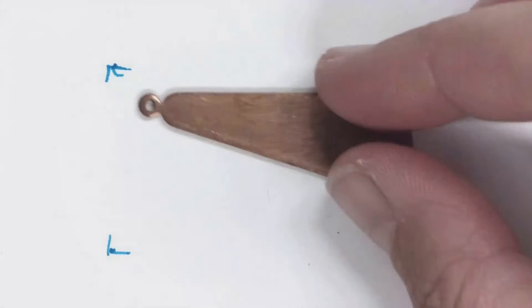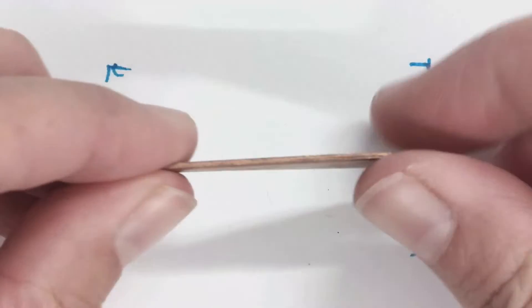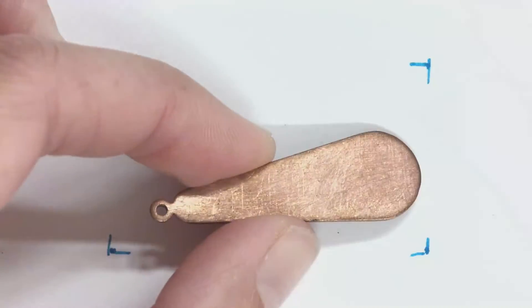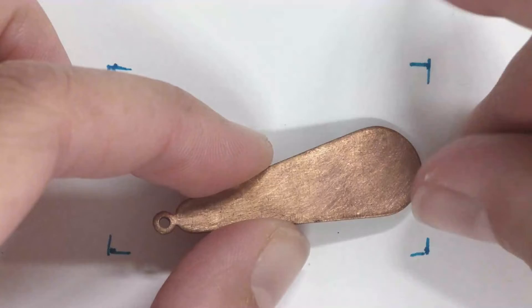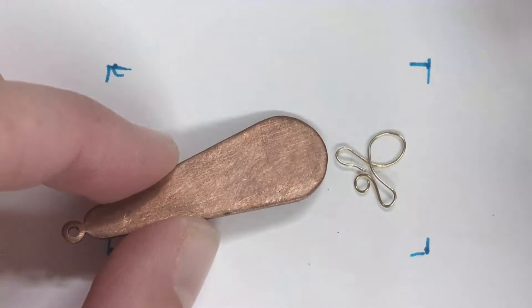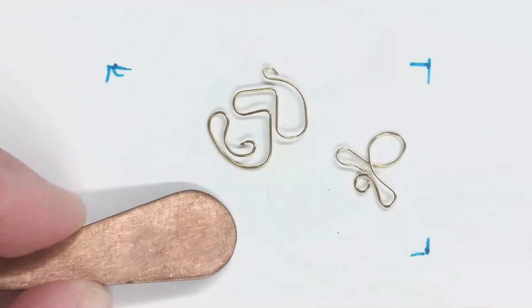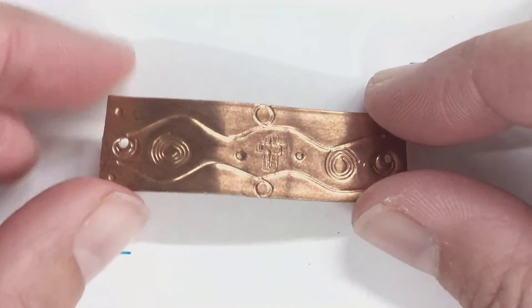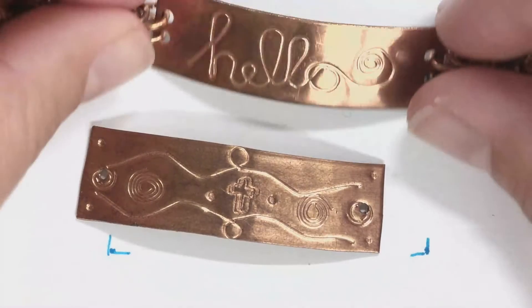You've got a metal blank like this. You've probably sawed it, filed it, sanded it, and it's ready to be embossed. So you're going to take a little piece of wire, wrap it into the shape you want, and press it into your metal. And it should look something like this when you're done, or this.